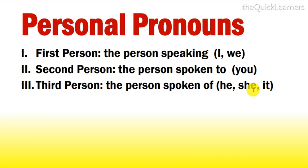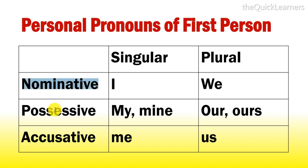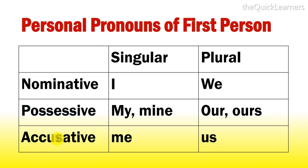All the personal pronouns are divided into three cases. There are three cases of each personal pronoun: nominative case, possessive case, and accusative case. Nominative case shows nomination, possessive case shows possession, and accusative case shows accusation.